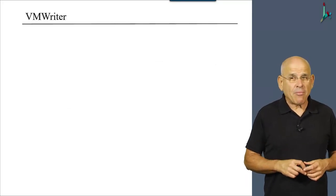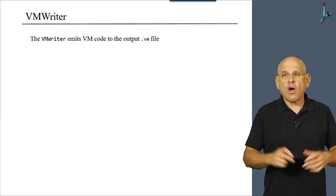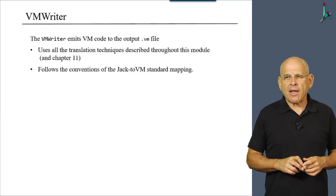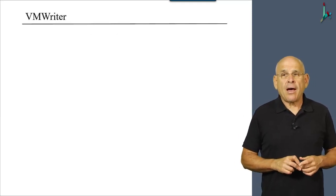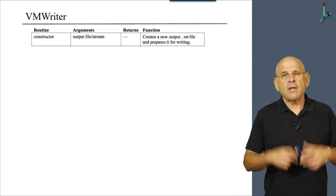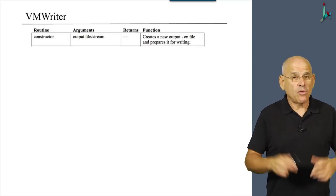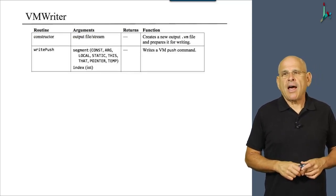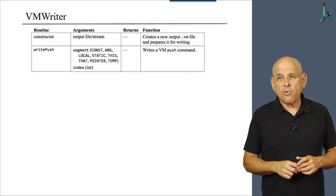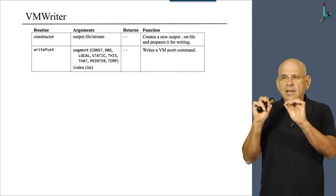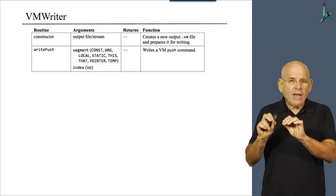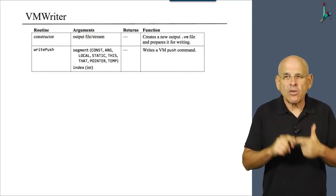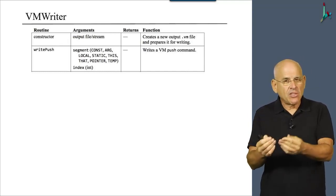Moving along, let's talk about the VMWriter. The VMWriter's job is to emit, generate and emit VM code into the output VM file and here's the API. The VMWriter has a constructor that creates a new output file whenever we start compiling a new class. We have a write push routine that writes a VM push command. Now in order to write a VM push command, you have to know to which segment you're pushing and what is the index that you want to affect.